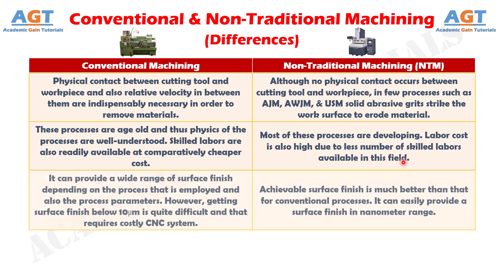Difference No. 7: Conventional machining can provide a wide range of surface finish depending on the process employed and the process parameters. However, getting surface finish below 10 micrometers is quite difficult and requires a costly CNC system, whereas in non-traditional machining, achievable surface finish is much better than that for conventional processes. It can easily provide a surface finish in the nanometer range.